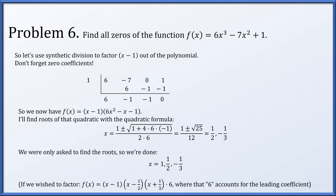If we wanted to write the fully factored form, we'd have three factors: (x minus 1), (x minus one-half), and (x plus one-third), times an unknown constant. That constant is 6, to produce the correct leading coefficient.